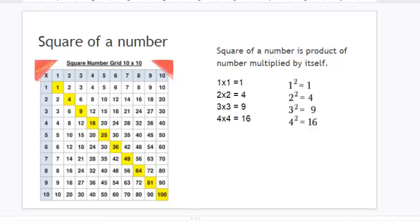On the screen you are seeing a square grid, 10 by 10 grid. Observe the yellow blocks, how you have obtained the first yellow block which is on the top left corner. 1 multiply 1 is equal to 1. What is 2 multiply 2? 2 multiply by 2 is 4.